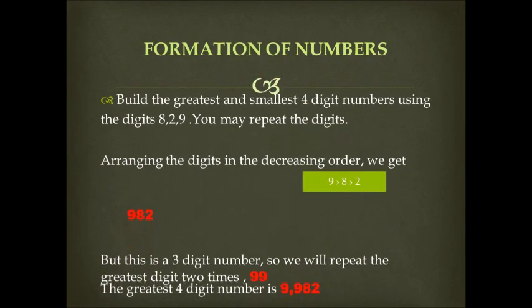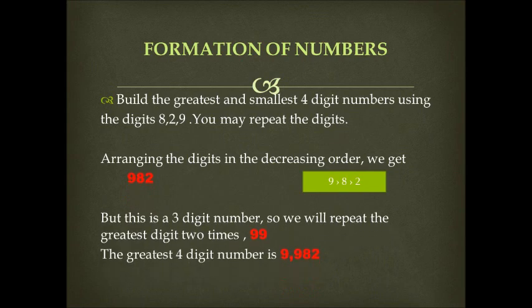Let us learn to build the greatest four-digit number using the digits 8, 2, and 9. You may repeat the digits. Arranging the digits in the decreasing order, we get 9, 8, 2.